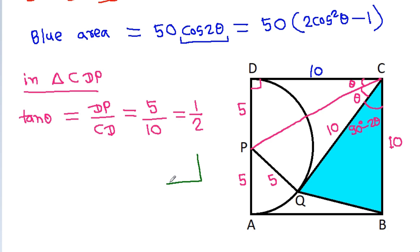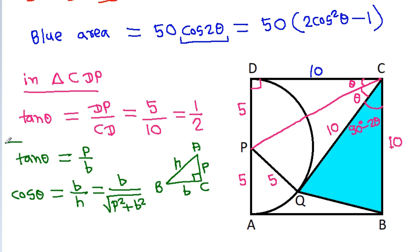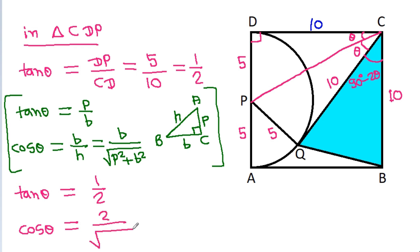In a right triangle, if the angle is 90 degrees with base B, perpendicular P, and hypotenuse H, then tan(θ) = P/B and cos(θ) = B/H = B divided by the square root of P² + B². Since tan(θ) = 1/2, we get cos(θ) = 2 divided by the square root of 1² + 2², which equals 2 over the square root of 5.